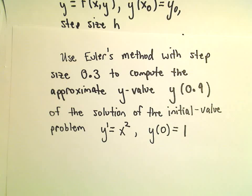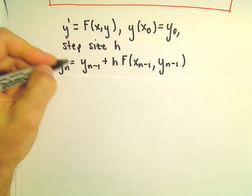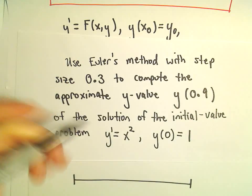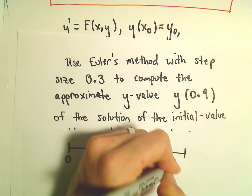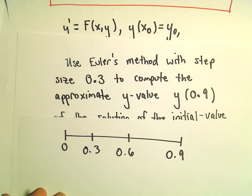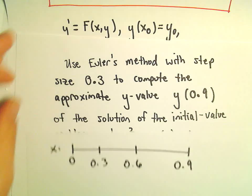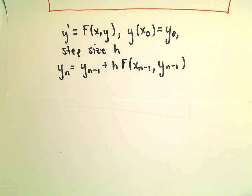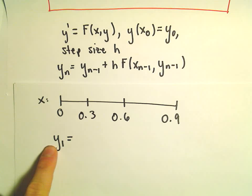Alright, so I'm going to start filling in our little formula here. So initially, we're starting at 0 and we're using step sizes of 0.3 to eventually approximate the y value associated with 0.9. So we'll have to use Euler's method a couple times. So I'm going to fill in this formula. So it says the first y value that we're going to approximate, and this is going to go with 0.3, it says that's going to equal the original y value plus the step size h.